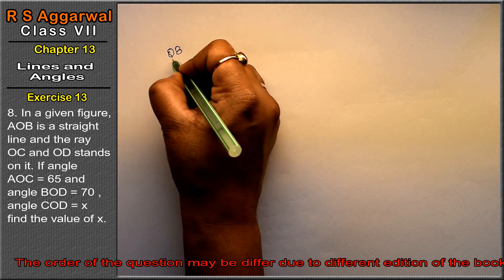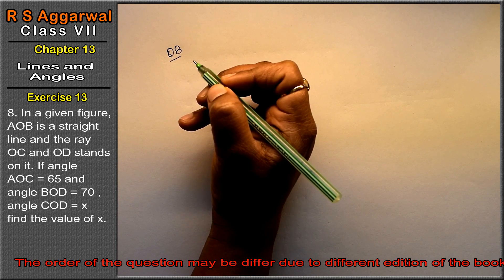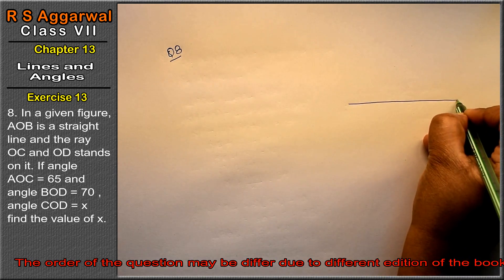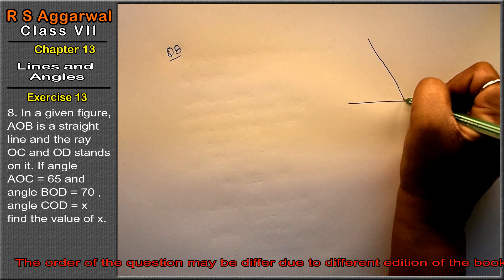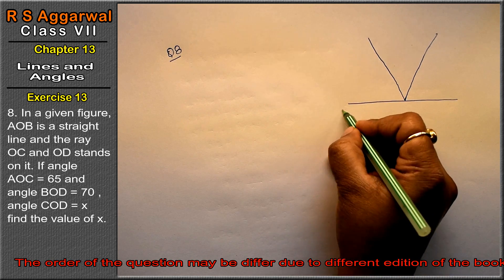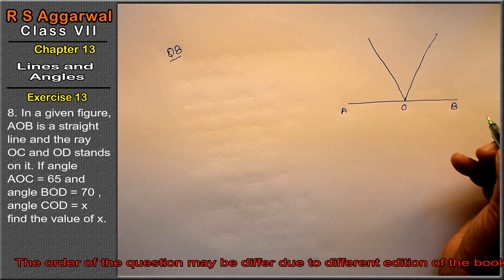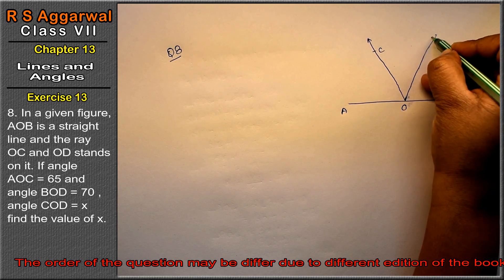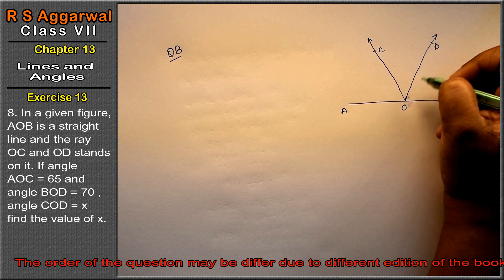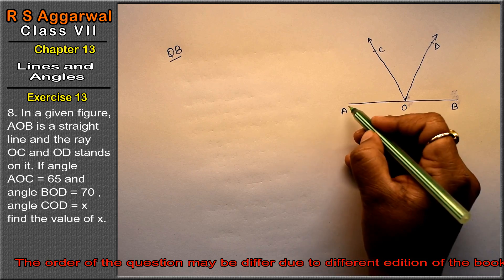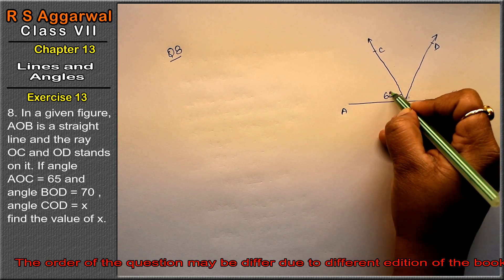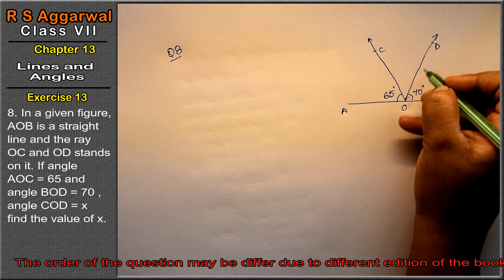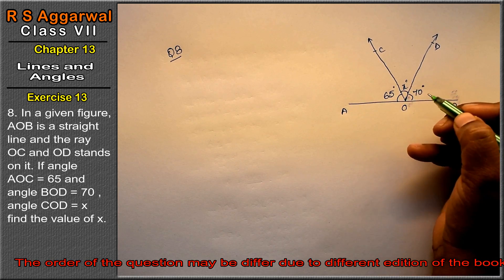Let's do question number 8 of Exercise 13, Lines and Angles. So question number 8 is: In the given figure, friends, let me draw the figure first. In the given figure, AOB is a straight line and the ray OC and OD stand on it. If AOC is 65 degrees, BOD equals 70 degrees, and COD equals x, find the value of x.